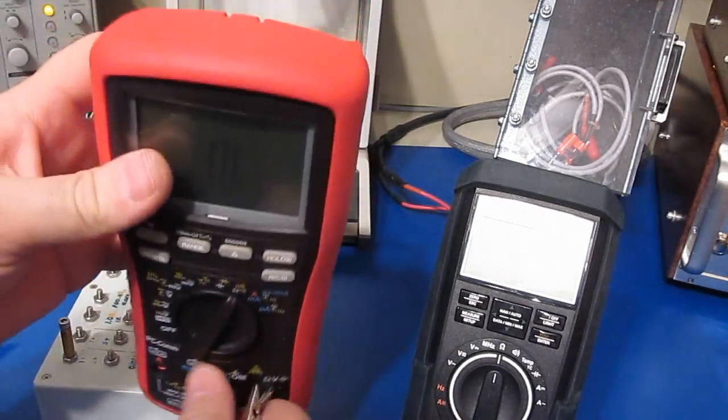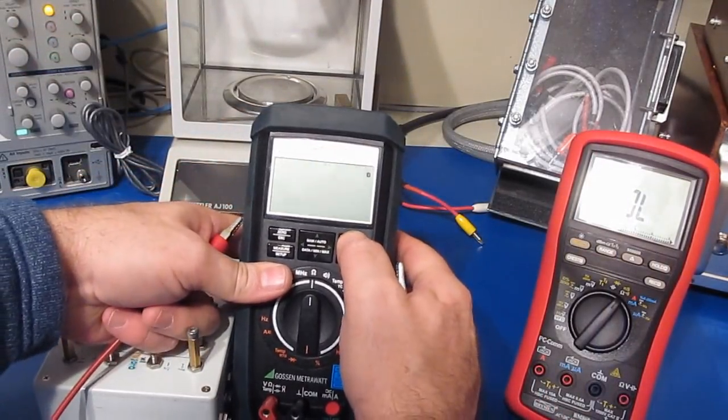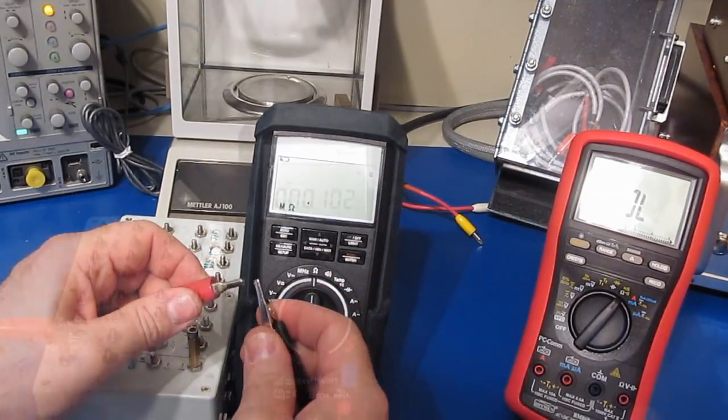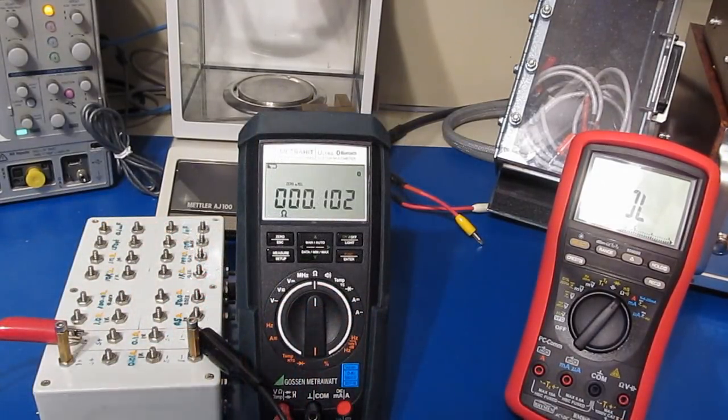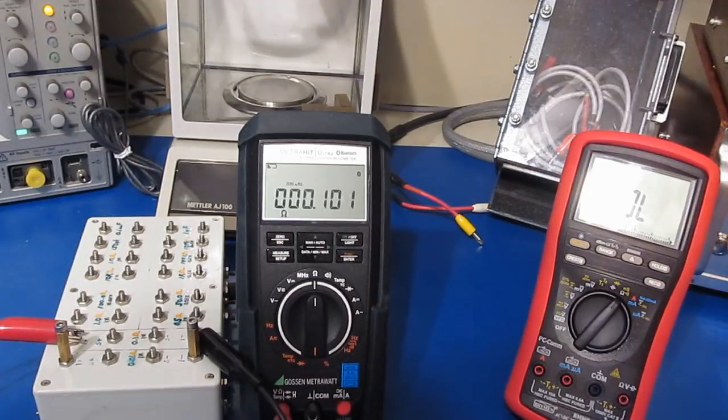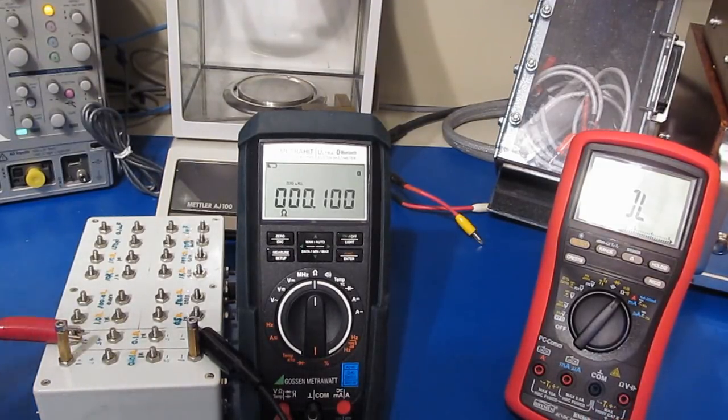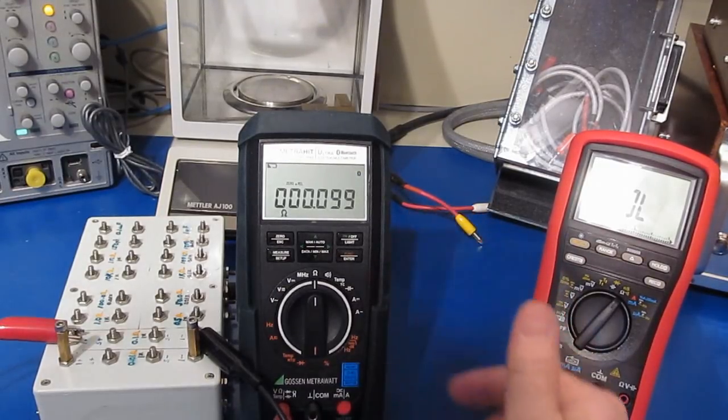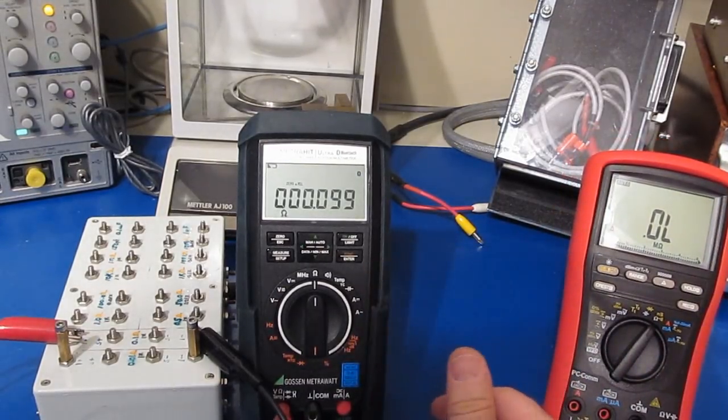This isn't real accurate either. Now this Gossen Metrawatt can display out past three places, it's point one oh one ohms. Of course, this meter is going to cost about nine hundred dollars with tax.